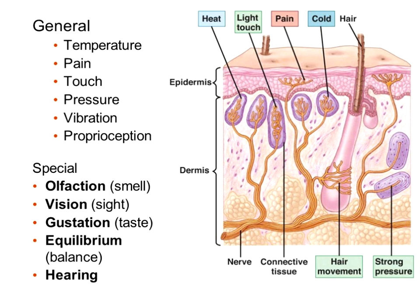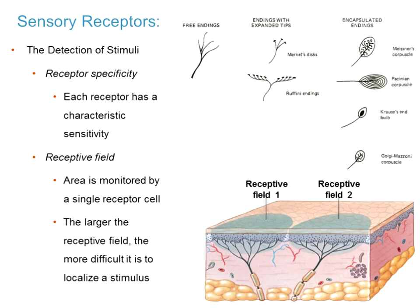Our Special Senses are usually around the head because olfaction is in the nose, vision with the eyes, gustation in the mouth, equilibrium in the ear, and hearing in the ear. From our cranial nerves, olfactory is cranial nerve one, vision is cranial nerve two. We have gustation in a few cranial nerves, and equilibrium and hearing are the vestibulocochlear nerves.